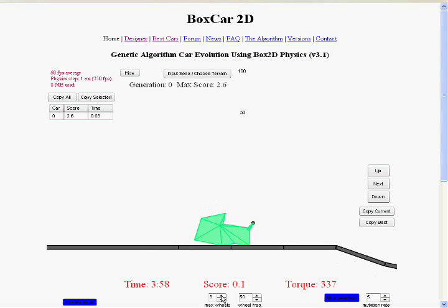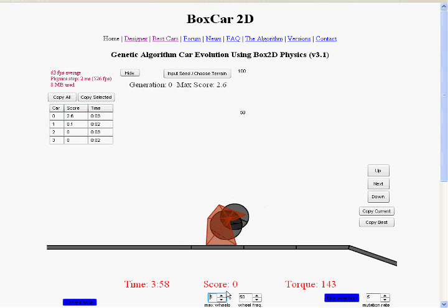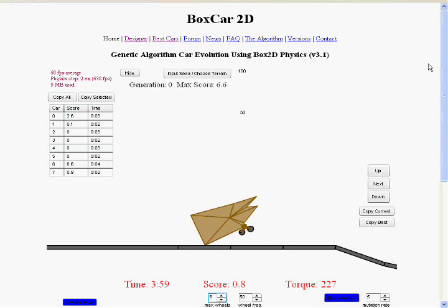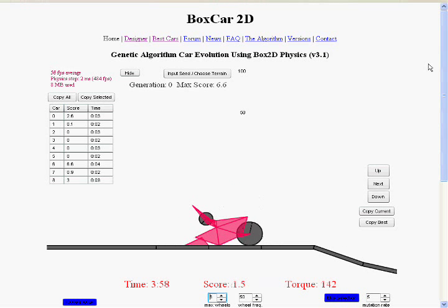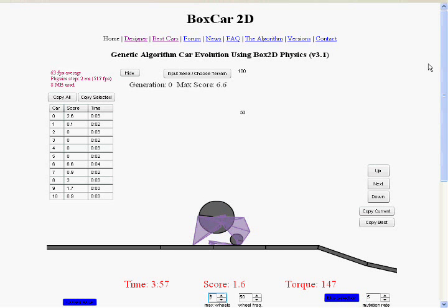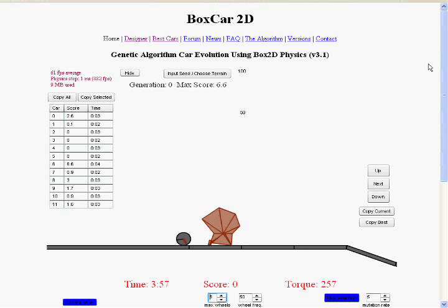Hey folks, it's Bobo the Vulture and it's time to let's play Boxcar 2D. The game in which you don't actually do anything other than set the maximum number of wheels and the frequency, mutation rate, that sort of thing. The game sort of figures itself out. It is a genetic algorithm car evolution using Box2D physics.